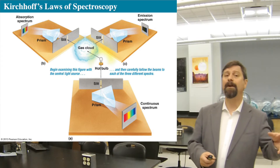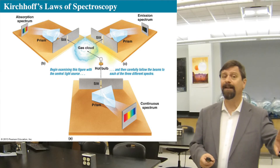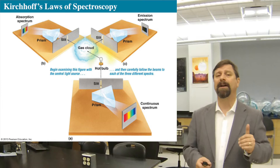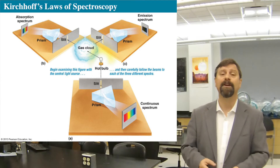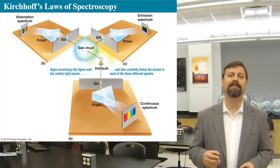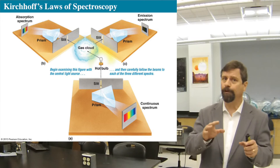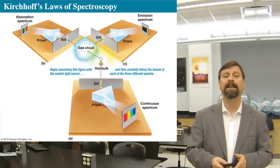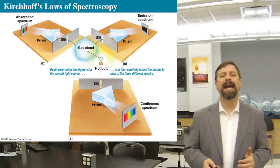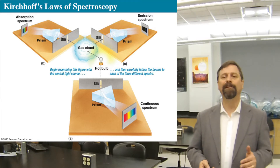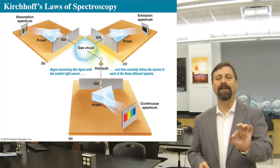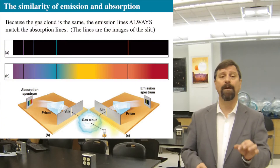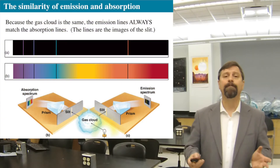Look through the cloud at the hot body and you'll see an absorption spectrum, or look off to the side at just the cooler cloud compared to the hot body and you'll see an emission spectrum. They're all part of the same thing.